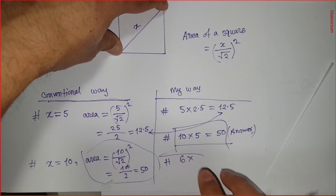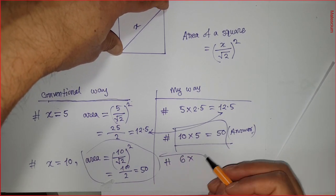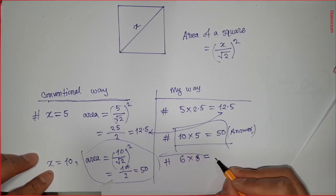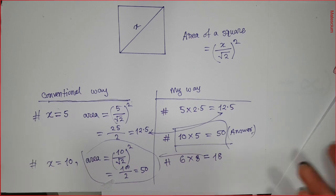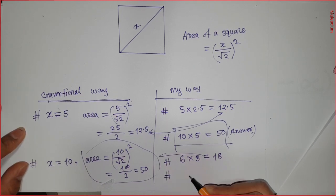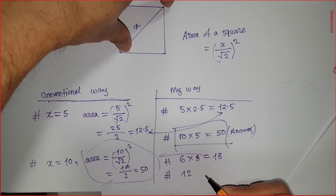Let me give you another example. Let's say this diagonal length is 6. So my way is simply multiply this 6 by its half - that means 6 times 3, which equals 18. 18 square centimeters or 18 square meters.